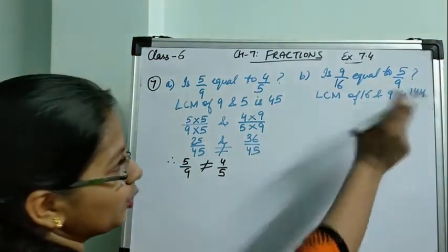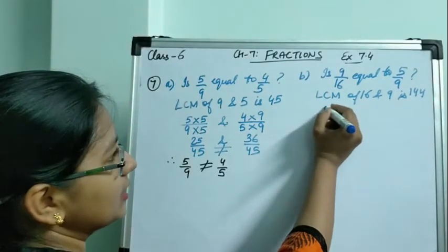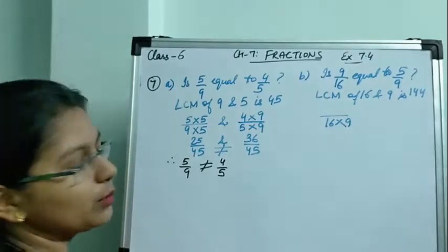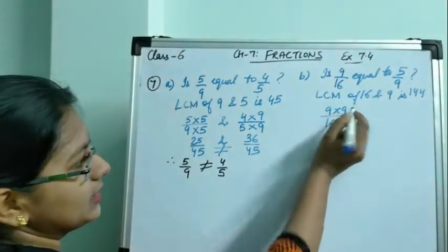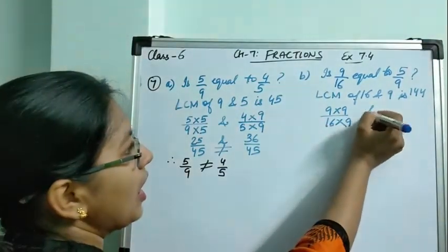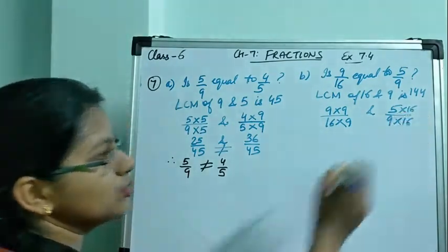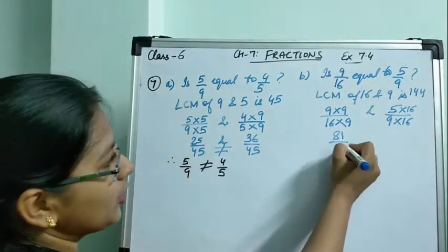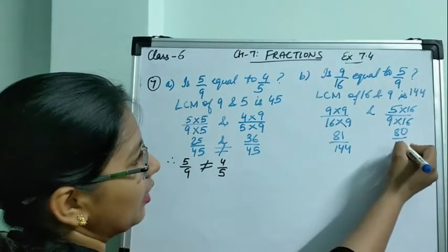I am doing direct calculation because I know the tables. If you also know the tables, you will understand this. For converting 16 to 144, I multiply by 9, so 9 is also multiplied by 9. Whatever the denominator is multiplied by, the numerator must also be multiplied by the same. And 5 by 9 is multiplied by 16. This gives 81 by 144 and 80 by 144.